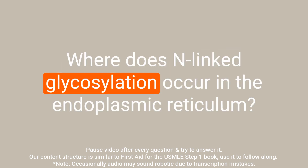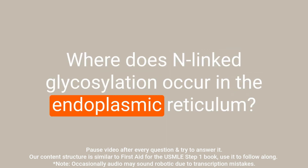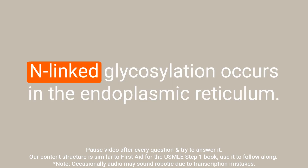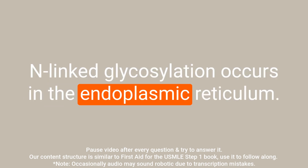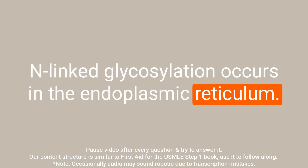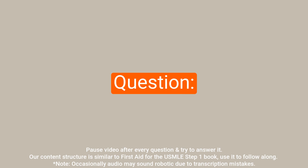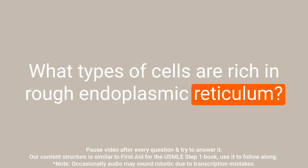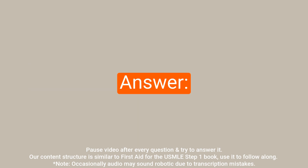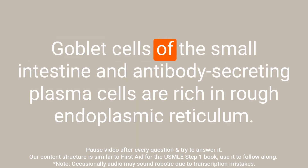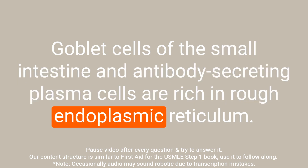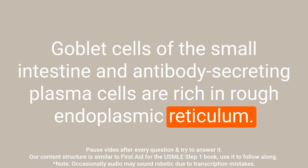Question: Where does N-linked glycosylation occur? Answer: N-linked glycosylation occurs in the endoplasmic reticulum. Question: What types of cells are rich in rough endoplasmic reticulum? Answer: Goblet cells of the small intestine and antibody-secreting plasma cells are rich in rough endoplasmic reticulum.